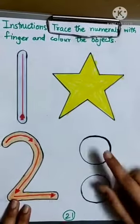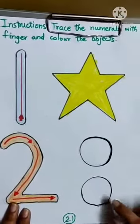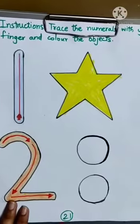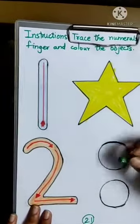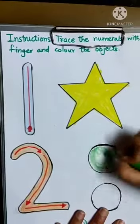And now, we have 1, 2. 2 circles. So, here I am taking green crayon to color the circles.